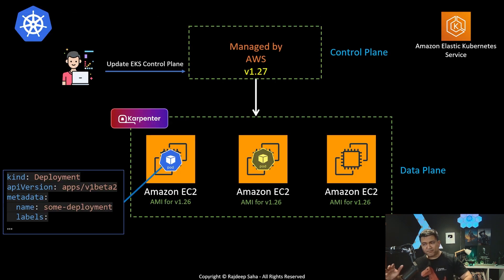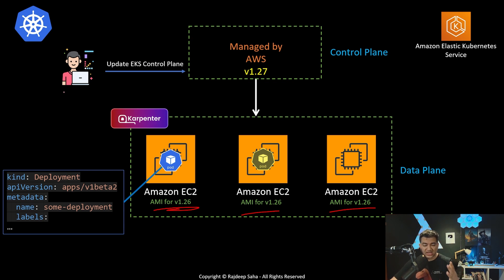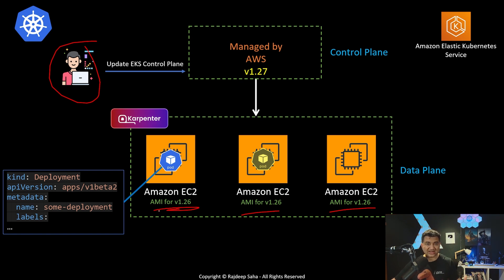The next big pain point is upgrading the AMIs. The control plane upgrade is relatively straightforward — you do all the testing, then a system admin goes and updates it via API or console. Upgrading the AMI can be more painful, especially if you have been using Cluster Autoscaler with node groups and launch configurations — you have to update the launch config and then run a recycle command.